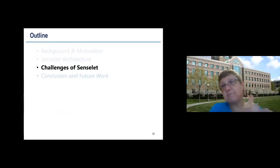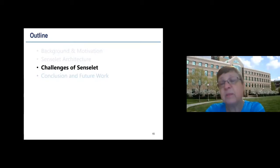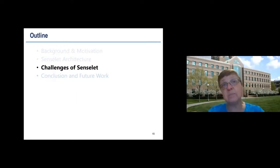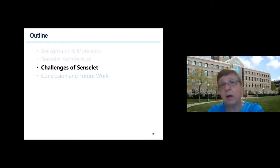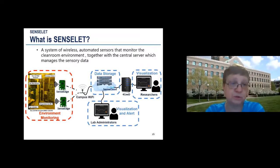So that is the overall architecture — how you get data from labs monitoring the environment around instruments, and how it gets to the user, researcher, or lab manager. Now I want to talk briefly about some of the problems that arise when building these kinds of systems and infrastructures to help scientists.